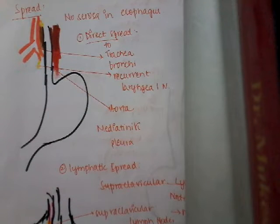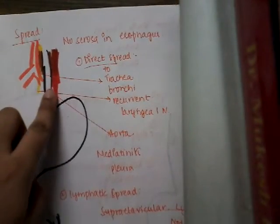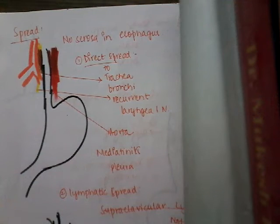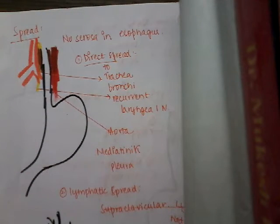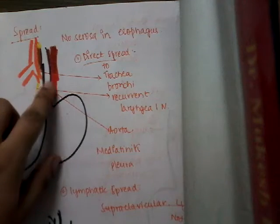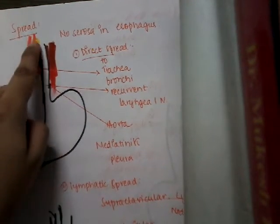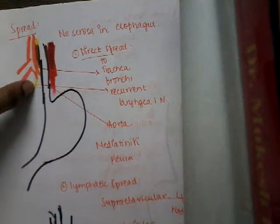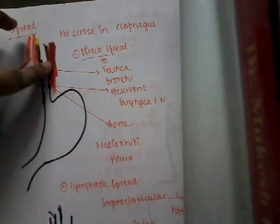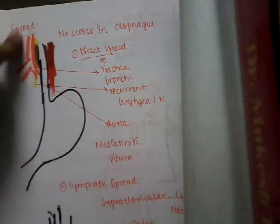Right now I'm dealing with the spread of carcinoma of esophagus. Generally, carcinoma of esophagus has no serosa — it has just mucosa, then submucosa, and muscularis propria. Because there is no serosa in the esophagus, there is direct spread of the cancer to the trachea and bronchi, and also to the recurrent laryngeal nerve. It spreads directly backwards to the aorta, and then it can spread to the mediastinum and pleura surrounding the esophagus.